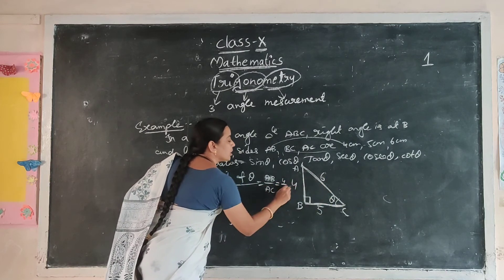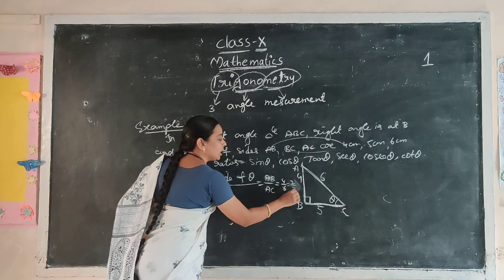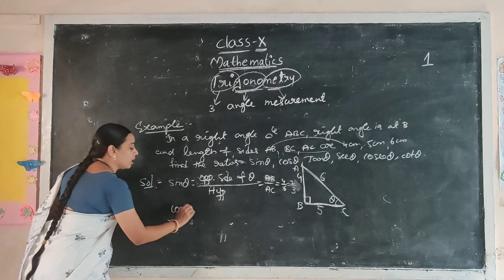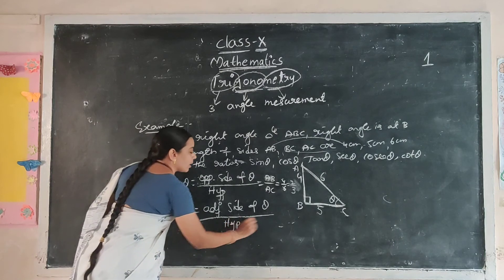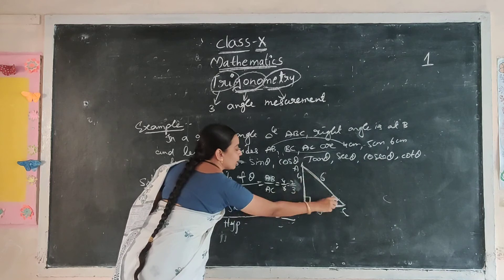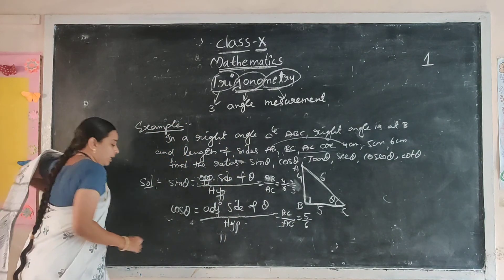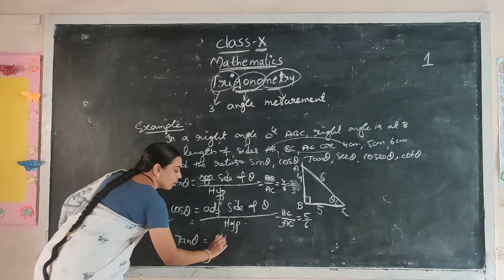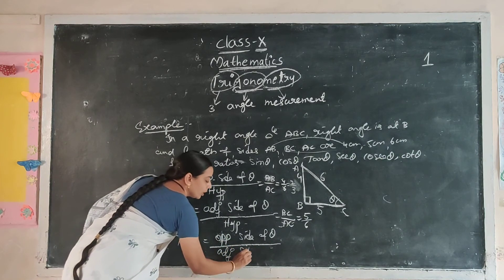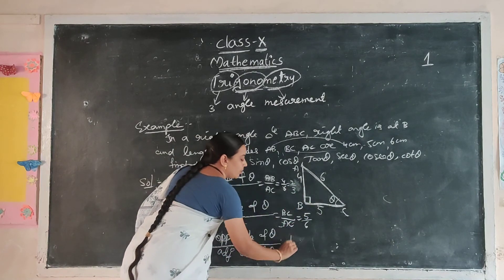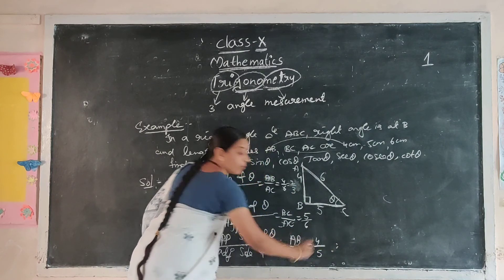Suppose you select angle A as theta. Sine theta means opposite by hypotenuse. Theta's opposite is AB — AB is 4. Hypotenuse is AC — AC is 6. So sine theta equals 4 by 6. Every fraction must be expressed in simplest form, so 4 by 6 simplifies to 2 by 3. Next ratio is cos theta. Cos formula is adjacent side of theta by hypotenuse. Theta's adjacent is BC — BC is 5. Hypotenuse AC is 6. So cos theta equals 5 by 6.